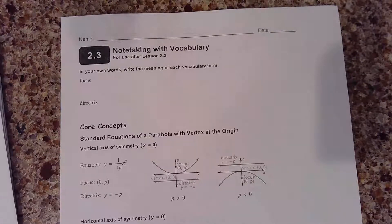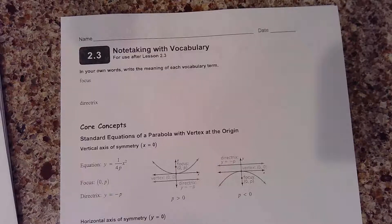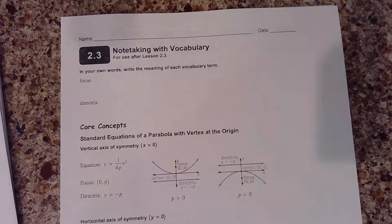So in this lesson, we go ahead and take kind of a detour away from our three standard forms of equations, right? So we have the standard form, we have the vertex form, and we have the intercept form. We're going to add in some more — we're going to talk about two new words: one called a focus and one called a directrix.